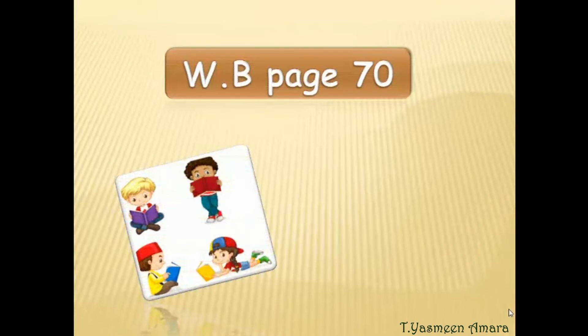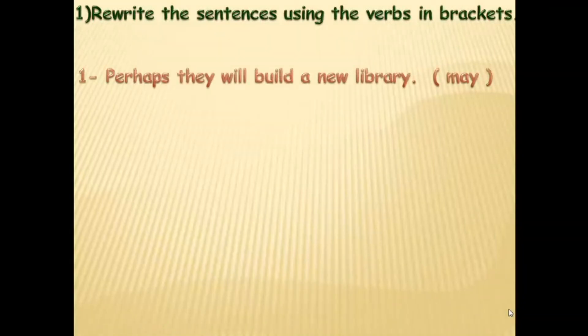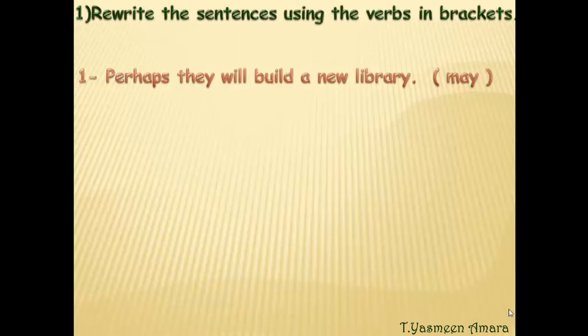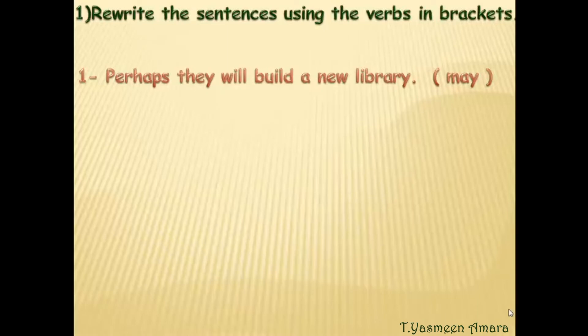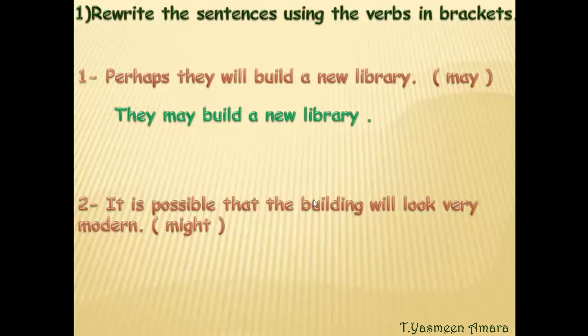Now bring your workbook and a pen to write the answers on page 70. Exercise one: rewrite the sentences using the verbs in brackets. Number one: 'Perhaps they will build a new library' — the modal verb is 'may.' The subject is 'they,' the verb is 'build.' The answer: 'They may build a new library.' Number two: 'It is possible that the building will look very modern' — the modal verb is 'might.'